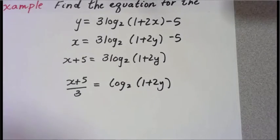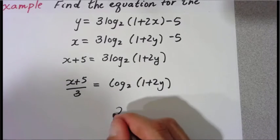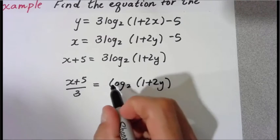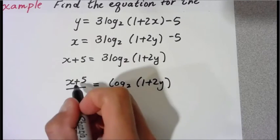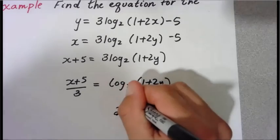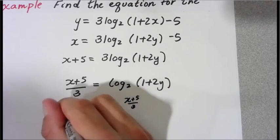So now once the log is by itself on one side, now we can rewrite this in exponential form. The base is two. The logarithm's base is the same as the exponentials. The logarithm is always equal to what the exponent of the exponential. So this will be two to the x plus five over three. And that's going to equal what's left, one plus two y.